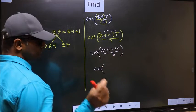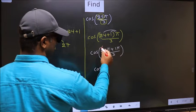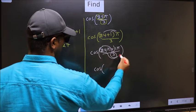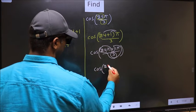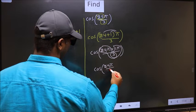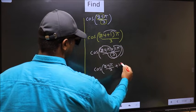Now cos over here, we should split the denominator in this way. That is 24π/3 plus 1π/3.